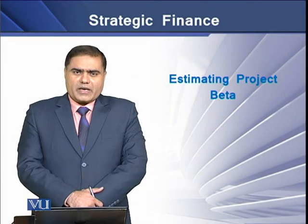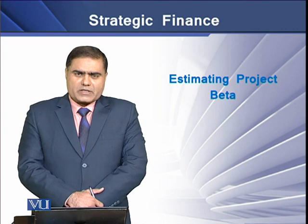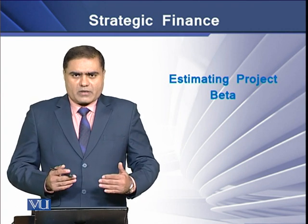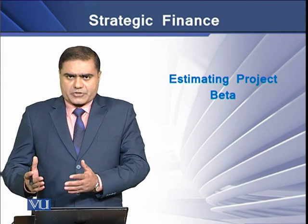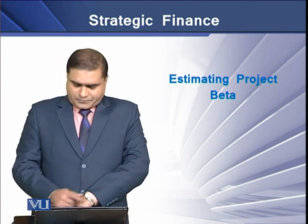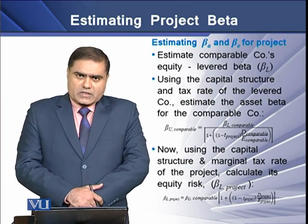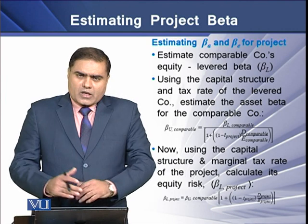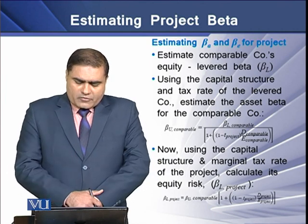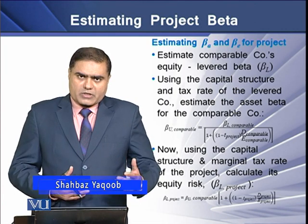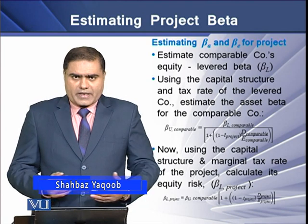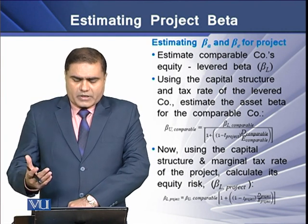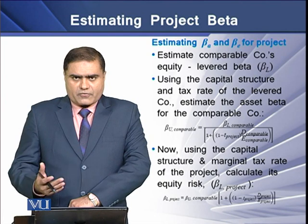The process of unlevering and levering computations used to estimate asset risk and equity risk of a company are equally applicable to estimate these risk measures for any project of another company. To estimate asset beta or equity beta for a given project, the process follows the same steps. First, we need to estimate a comparable company's equity beta, also known as the levered beta or BL. Then, using the capital structure and tax rates of the comparable company, we estimate the asset beta for that comparable company.